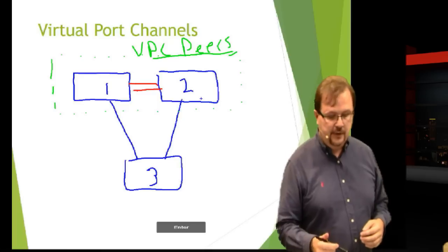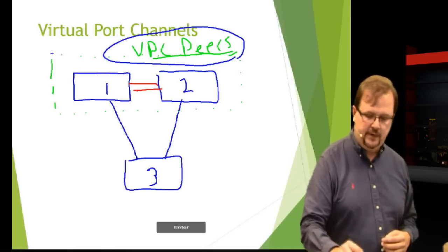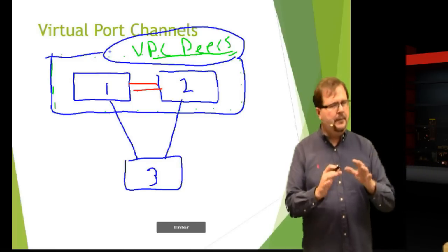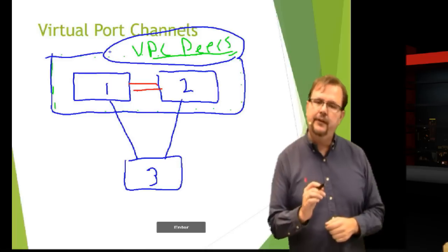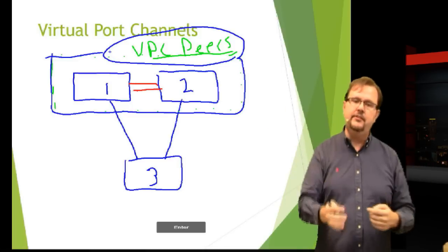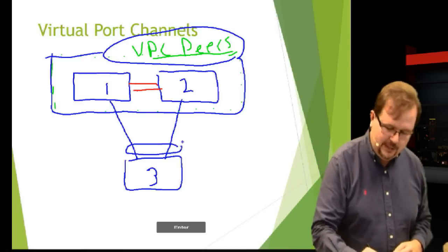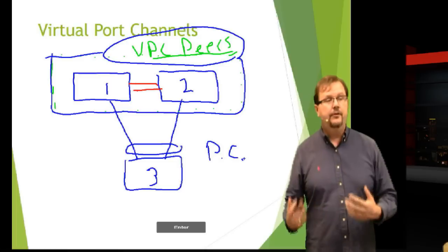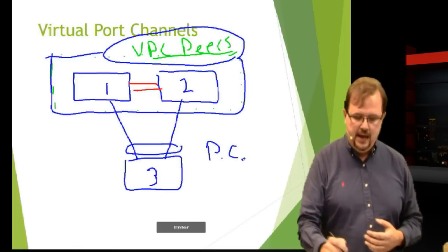So what I can do is, these guys we said are already set up as VPC peers. Switch one and two are VPC peers. Down here on switch three, it's kind of interesting. I have to configure VPC on switch one and two, yes. On switch three, you don't have to configure VPC. What you have to configure is plain old port channel, because he really doesn't know that there's two separate switches. He thinks it's just one switch and I just do port channel. So down here, switch three is just doing plain old port channel. Switch one and two are doing VPC, virtual port channel.